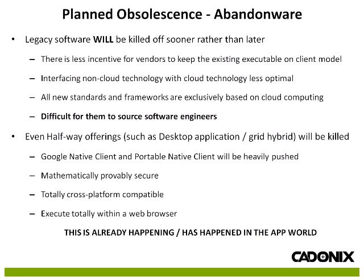Companies like Google have native clients — a virtual machine that runs within a web browser, mathematically provably secure, and totally cross-platform compatible with any system that can run Google Chrome, Android, or Chrome OS. A software company writing on this platform only has to write an application once and it will run absolutely everywhere. This is already happening: when a company writes Angry Birds, it has to run on iOS, Android, Chrome web browser, PC, Microsoft Xbox Live, and Steam — but the company writes it once on one of these platforms and it executes on all of them.